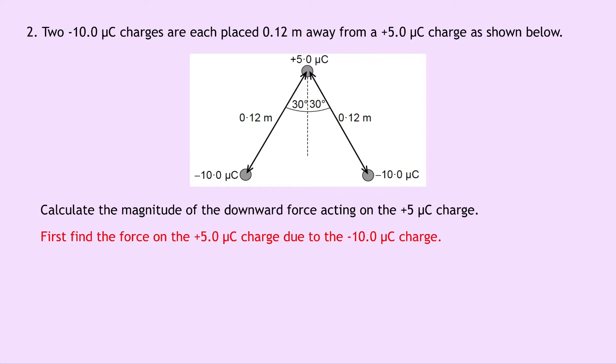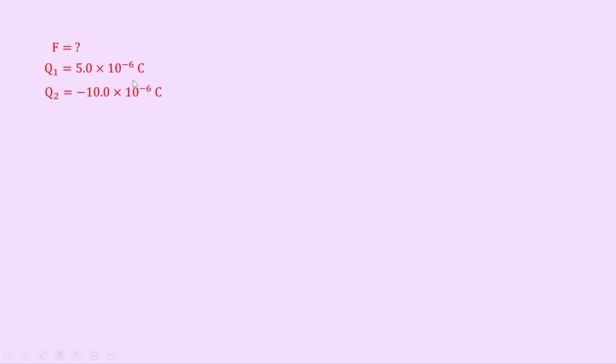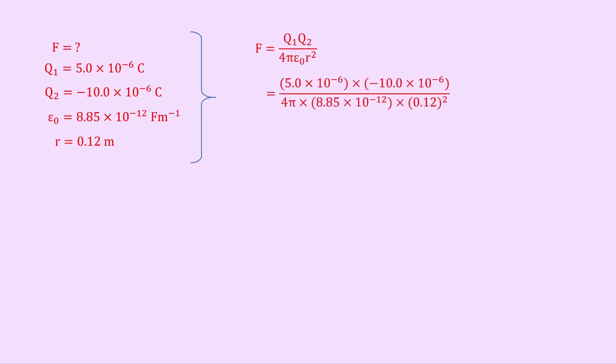We're interested in the magnitude only, and because the two charges are the same, we're just going to find the force due to one of them. Writing down what we know: we're trying to find F, Q1 is 5 times 10 to the minus 6 coulombs, Q2 is minus 10 times 10 to the minus 6 coulombs, epsilon naught is 8.85 times 10 to the minus 12 farads per metre, and the distance between them is 0.12 metres. Writing down our equation, F equals Q1 Q2 over 4 pi epsilon naught R squared. Substituting in the numbers gives us 5 times 10 to the minus 6 times minus 10 times 10 to the minus 6 divided by 4 pi times 8.85 times 10 to the minus 12 times 0.12 squared, giving an answer of minus 31.2 newtons.